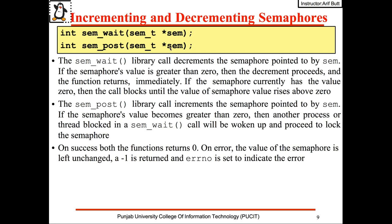If the semaphore's value becomes greater than zero after the post, another process or thread blocked on this semaphore will be woken up and proceed to lock the semaphore. I'm not going into the details of how these are implemented as we have all studied this in the operating system concepts course.